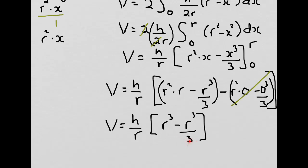The terms inside the brackets are like terms. To subtract them, I need a common denominator, so this would be over 3, and I multiply the top by 3 as well. I get V equals h over r times 2r³/3. When I multiply this out, the r cancels with one of the r's there, so you end up with V equals 2/3 r²h.